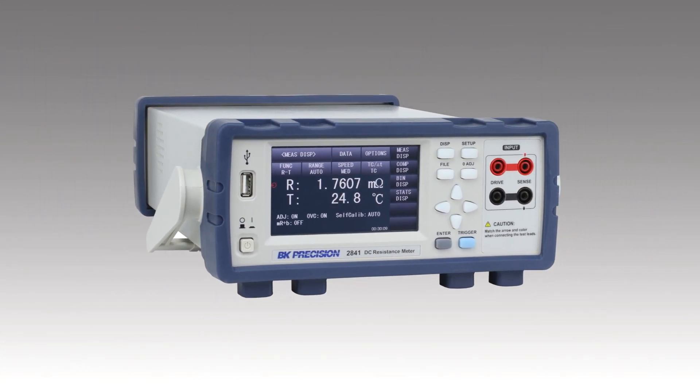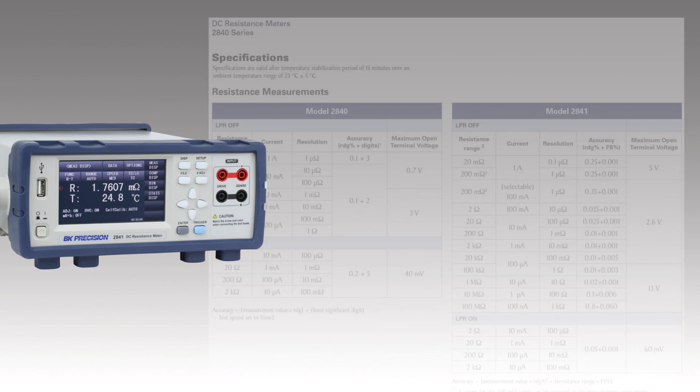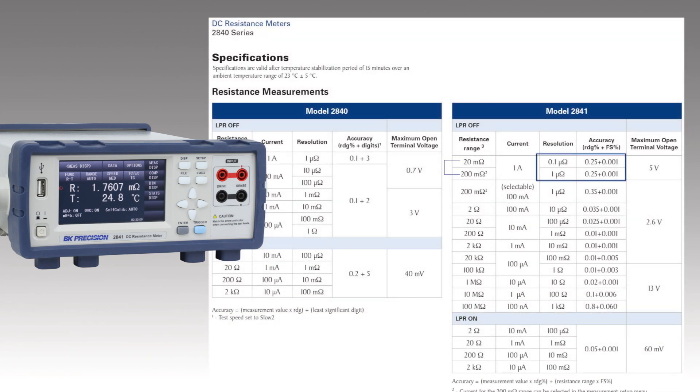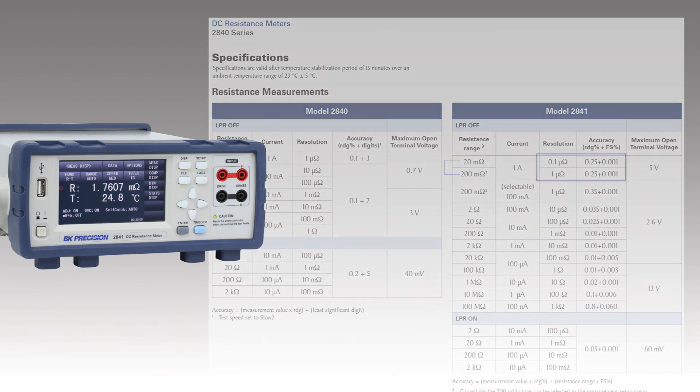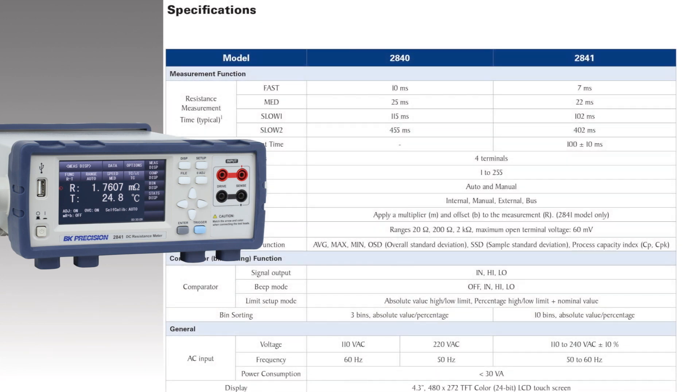The BNK Precision 2841 DC resistance meter has the range and accuracy I'm looking for, and even the medium measurement range is fast enough for this at 22 milliseconds.